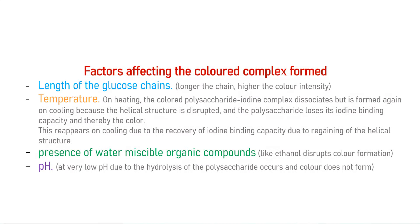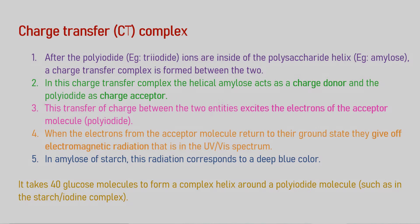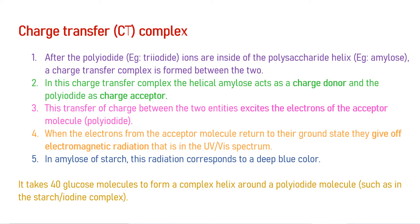The resulting color depends on certain factors such as the length of the glucose chains, temperature, presence of water-miscible organic compounds like ethanol, and pH. The color changes that occur are believed to be caused by charge transfer complexes, or CT complexes. After the polyiodide such as triiodide is inside the polysaccharide helix such as amylose, a charge transfer complex is formed between the two. In this complex, the helical amylose acts as a charge donor and the polyiodide as an acceptor. This transfer of charge excites the electrons of the acceptor molecules — in this case the polyiodide. When those electrons return to their ground state, they give off electromagnetic radiation in the UV-visible spectrum. In the case of the amylose component in starch, this radiation corresponds to a deep blue color.